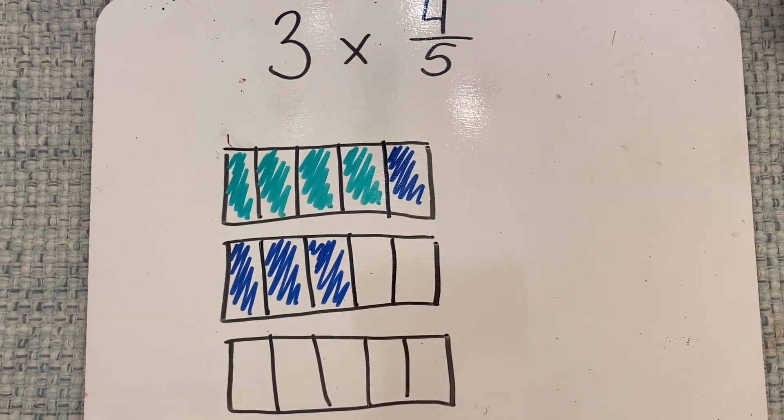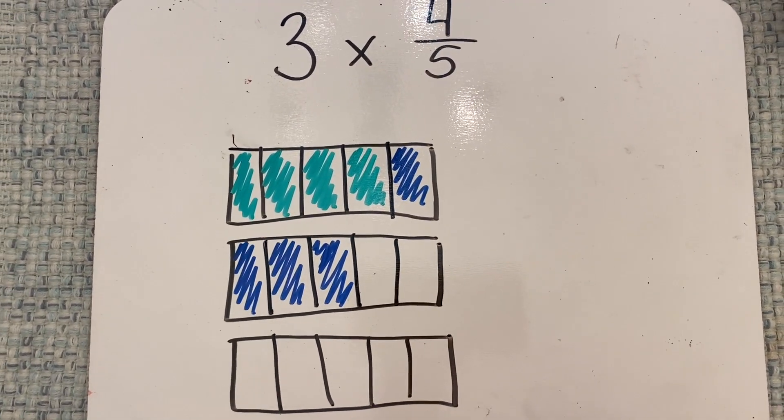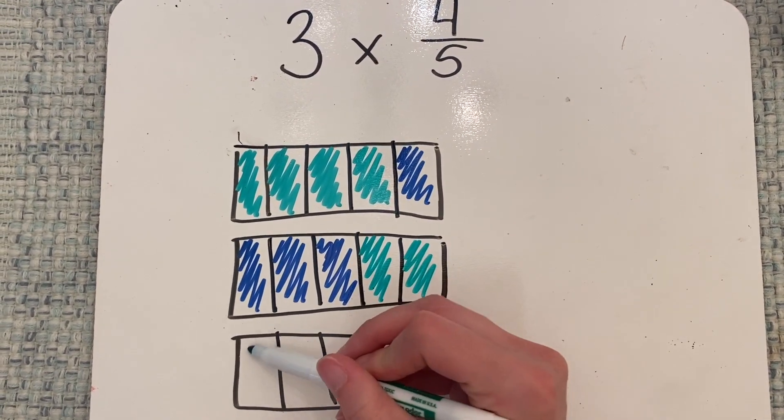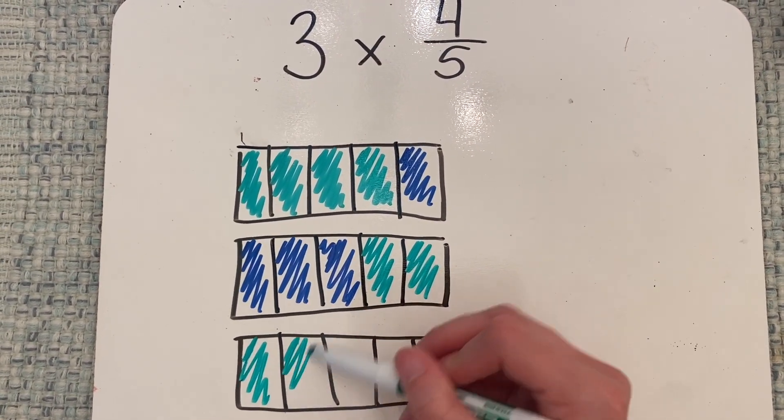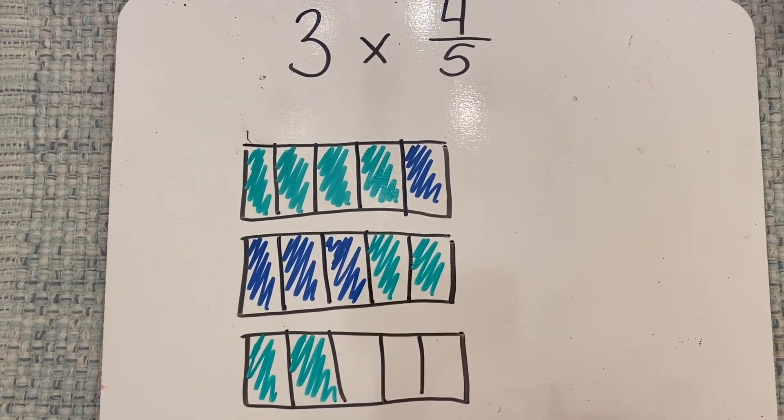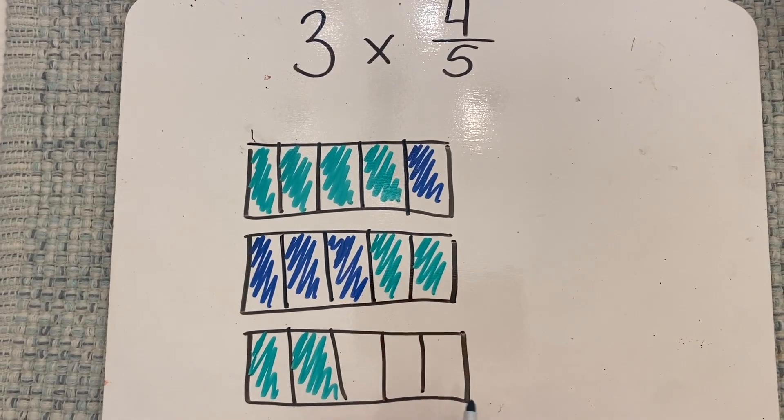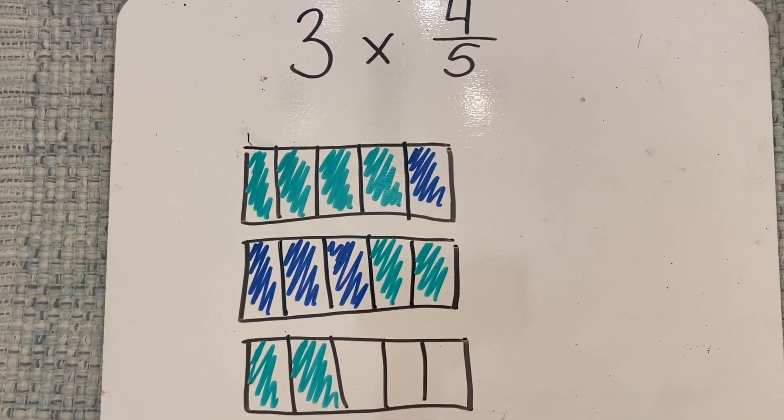And then I can go back to my first color and just keep alternating for as many groups as I have. So in this case, I just need one more. And by not skipping the end of the boxes this way, by continuing on from where I left off, I can easily see what my answer should be.